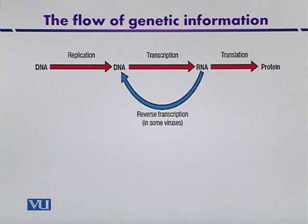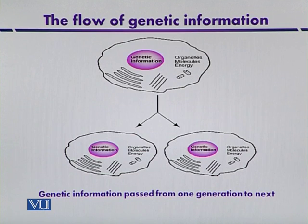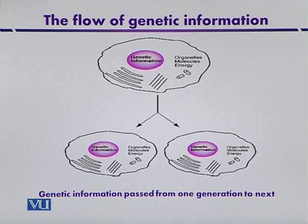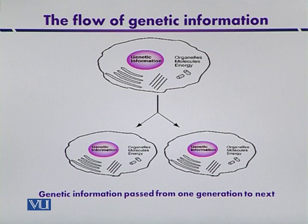From RNA, the information is translated into a functional product, which is a protein. In a eukaryotic cell, which has a well-developed nucleus containing membrane-bounded DNA, the genetic information is transferred from the parent cell to the next daughter cell.